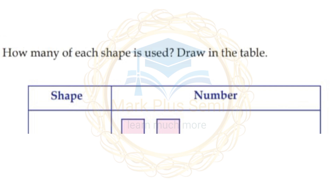Triangles: 12 triangles total. Now for circles: counting 1, 2, 3, 4, 5, 6, 7, 8, 9 — there are 9 circles.